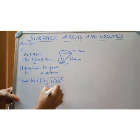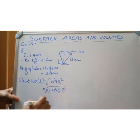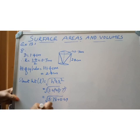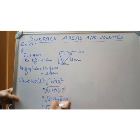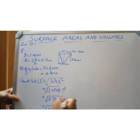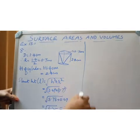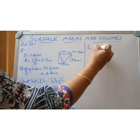L equals square root of (2.4)² plus (0.7)², which is square root of 5.76 plus 0.49, that is square root of 6.25. Square root of 6.25 is 2.5 cm. So we got the slant height L equal to 2.5 cm.